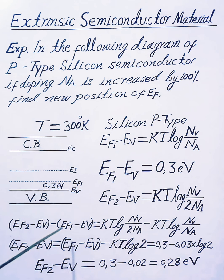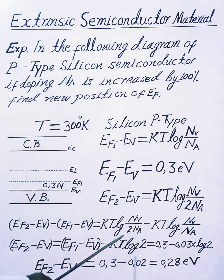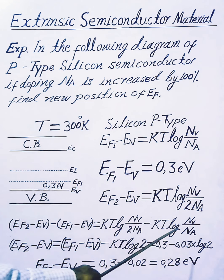Taking the difference, EF2 minus EV minus EF1 minus EV equals KT log Nv divided by 2Na minus KT log Nv divided by Na.